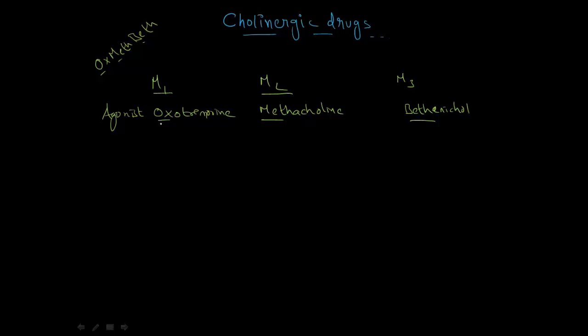And M3 is for bethanicol. So ox, meth, and beth for muscarinic agonists. For antagonists, M1 has pirenzepine or telenzepine. M2 has meth's friend, which is methoctramine or trepidramine. And M3 has beth's friend, solda and dar. Solda stands for solifenacin and dar stands for darifenacin.